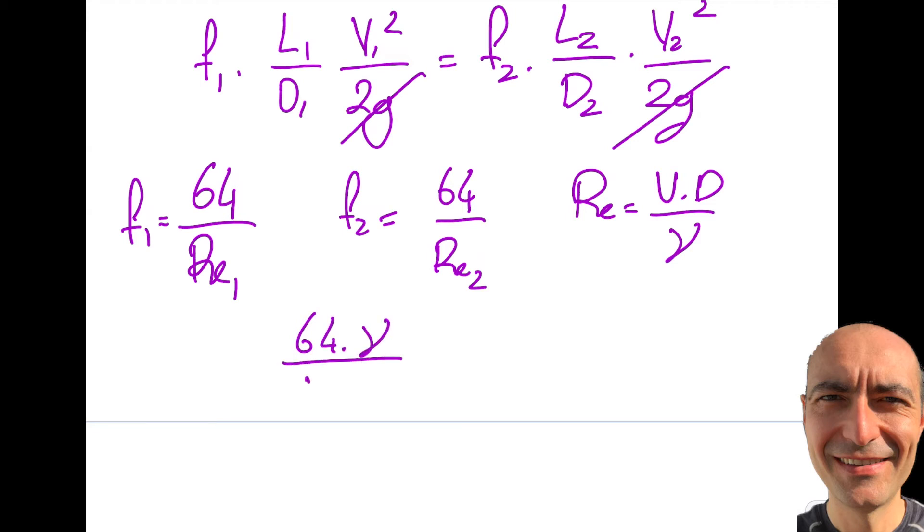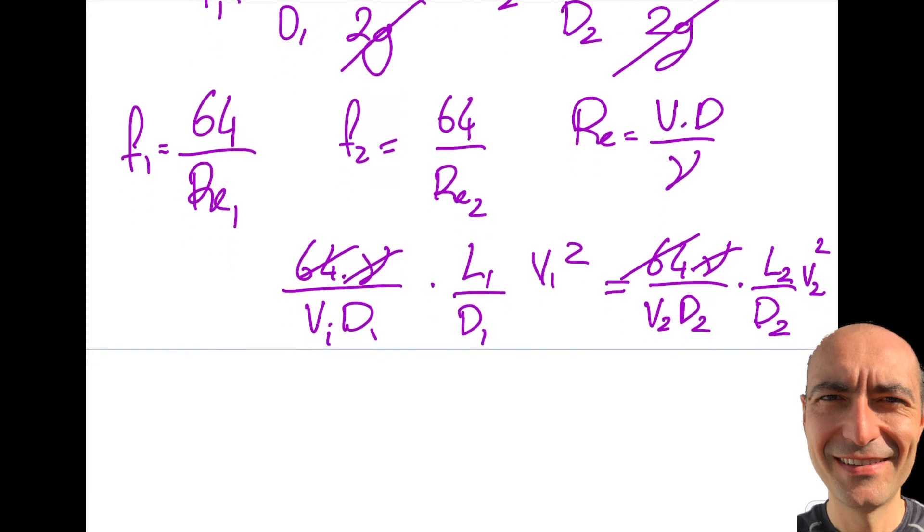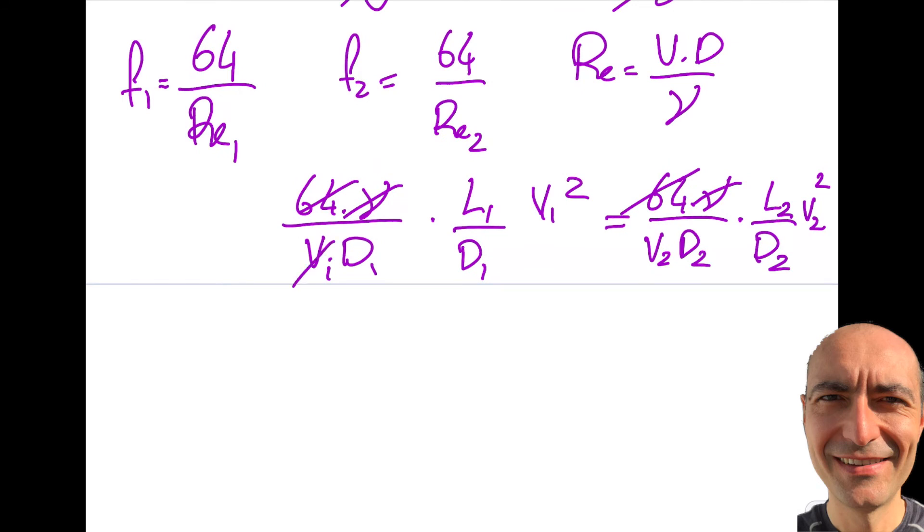Let's go back and insert and see what happens. So f1 is 64 times kinematic viscosity divided by v1d1 times L1 over D1 times V1 squared equals 64 kinematic viscosity over V2D2 times L2 by D2 times V2 squared. I'm not gonna write 2g anymore. Let's take a look: 64 is cancelled, kinematic viscosity is cancelled. Temperature is the same between those two branches. You do see that one of them will cancel. So basically I get L1 V1 by D1 squared will be equal to L2 V2 by D2 squared.